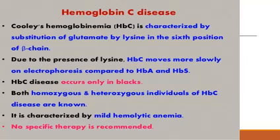Hemoglobin C disease is also known as Cooley's hemoglobinemia. Here, the substitution of glutamate by lysine is at the 6th position of the beta chain. In normal hemoglobin, you have glutamic acid at the 6th position; due to the point mutation, this glutamic acid is replaced by lysine at the same 6th position of the beta chain. Due to the presence of lysine, hemoglobin C moves slowly on electrophoresis compared to hemoglobin A and hemoglobin S.